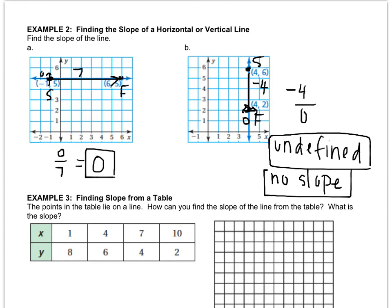Either one of these is fine. You do not have to write both. You can pick whichever one you like. But this is an undefined slope. Horizontal lines all have a 0 slope. And vertical lines all have a no slope or undefined slope.